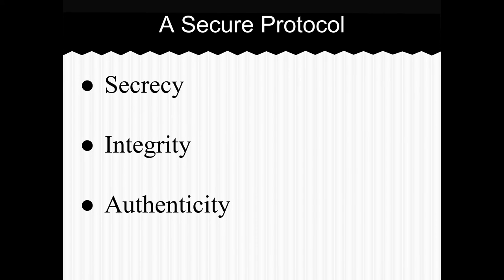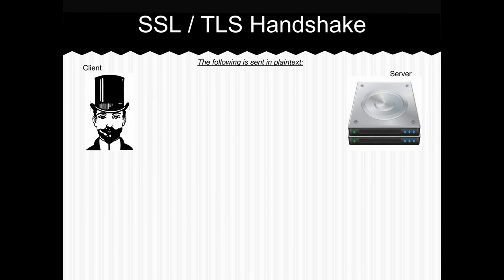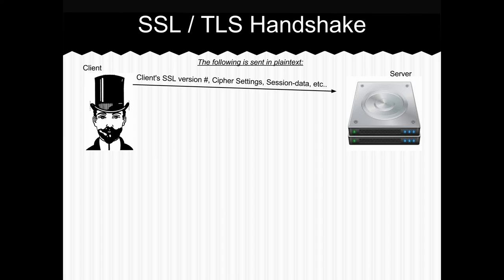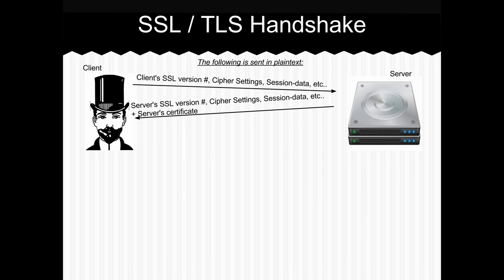In the end, what is needed to secure internet communication is something to provide secrecy, integrity, and authenticity. At a high level, the client makes initial requests — sends its SSL version, cipher options, and other session data. The server responds with the SSL/TLS versions it supports, the cipher options it supports, and notably also provides its own certificate.